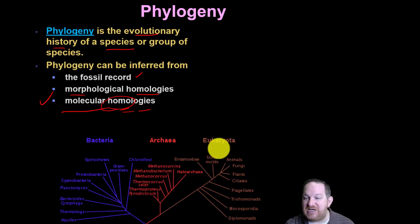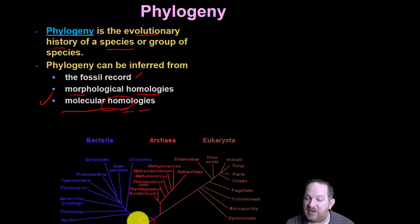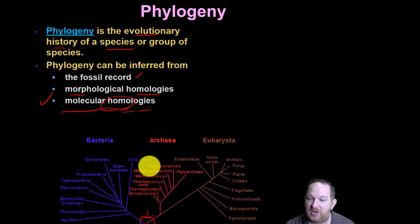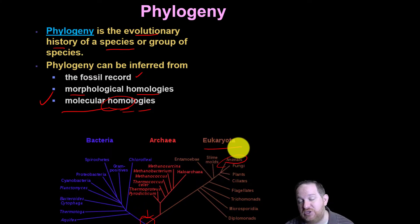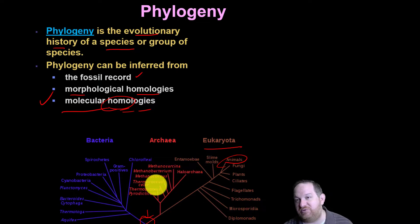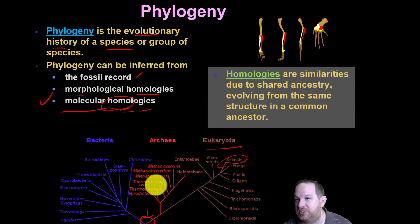Here's a typical phylogenetic tree. If you think about the beginning, life evolved and went in a few different directions: to bacteria, to archaea, and then of course us as animals in the eukarya domain, along with everything else. This is just a very oversimplified tree that shows that.